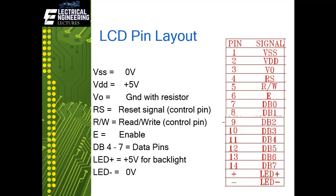E is the enable pin, which is the third control pin. Then come the data pins — we are using only 4 data pins to interface the LCD, connecting DB4 to DB7 with our PIC microcontroller. Finally, LED+ is 5V for the backlight, and we normally insert a 330-ohm resistor to avoid burning the LCD. LED- is connected to ground. So this is the LCD pin layout.